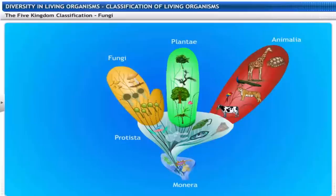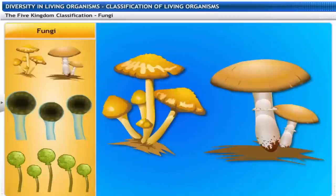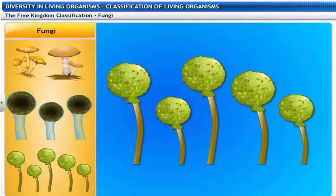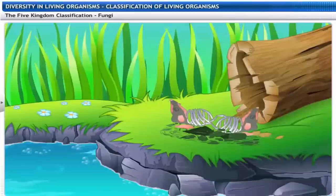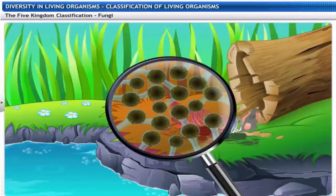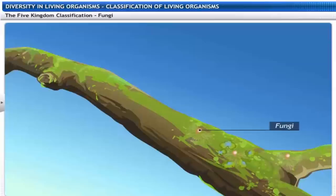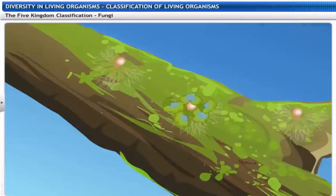The next kingdom, Fungi, includes mushrooms, Rhizopus and Mucor. These organisms are not plants and are not capable of performing photosynthesis. Most fungi are multicellular and eukaryotic. They have cell walls made of a tough complex sugar called chitin. Fungi decay dead plants and animals to derive their food — hence the name saprophytes. Some fungi live in a mutual relationship with blue-green algae; together they are known as lichen, and this relationship is called symbiosis.